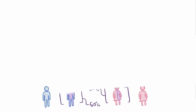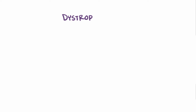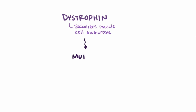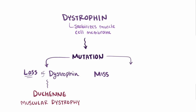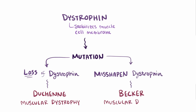As a quick recap: the protein dystrophin is super important for stabilizing the muscle cell membrane. Mutations in the dystrophin gene that lead to a loss of dystrophin cause Duchenne muscular dystrophy, whereas mutations that lead to misshapen dystrophin cause Becker muscular dystrophy.